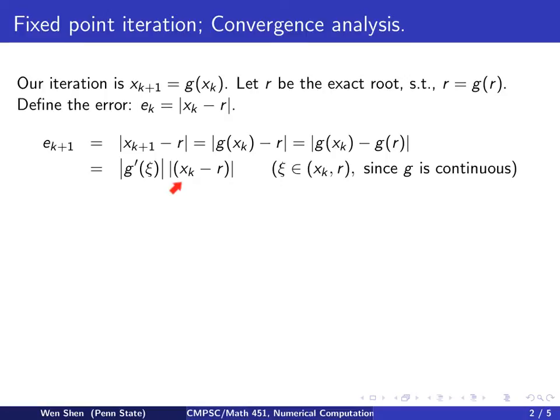And then multiply with the distance between x_k and r. That can be done because g is continuous and differentiable. And we see that x_k - r is exactly e_k.